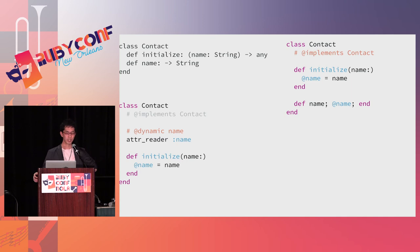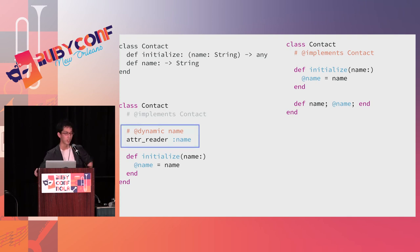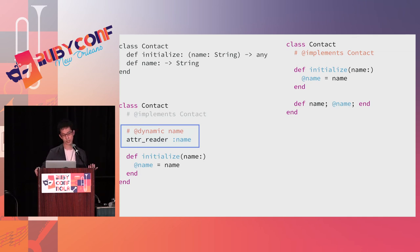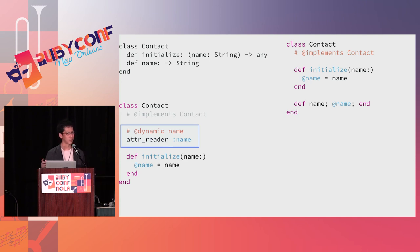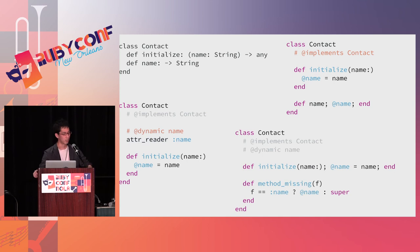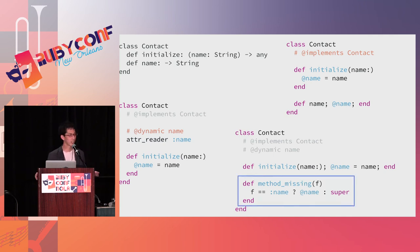For metaprogramming cases, if you define the Contact class using 'attr_reader', the 'name' method is not defined using 'def' syntax, so Steep cannot understand whether 'name' is defined. It becomes the programmer's responsibility to tell Steep that 'name' is defined without 'def' syntax, using an 'autodynamic' annotation — similar to Objective-C's dynamic annotation. This means you can use any metaprogramming technique like method_missing instead of attr_reader, and Steep just trusts your annotation.